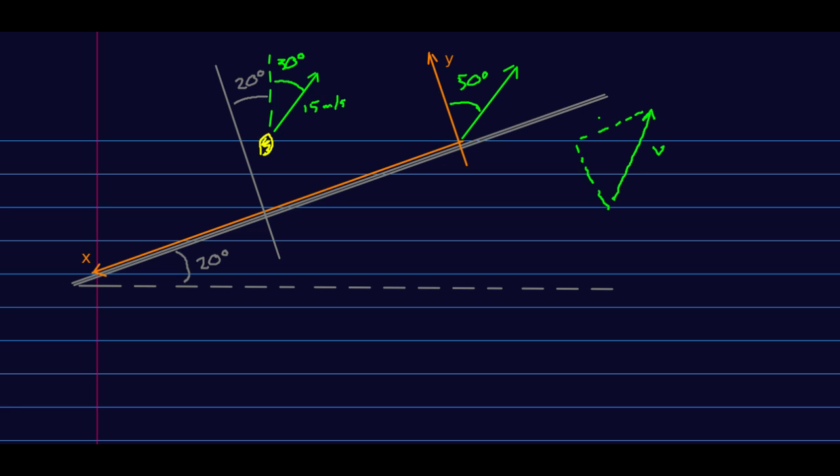And so now in our new coordinate system, we've got this situation. There's our v, here's our vx, here's our vy, and this is 50 degrees. And so we can do it all again.